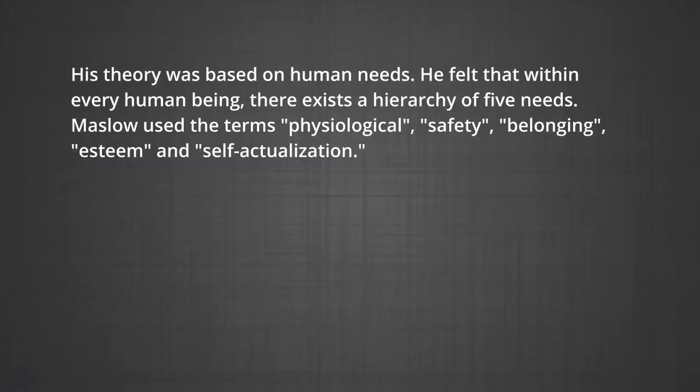Abraham Maslow, a well-known psychologist, in a classic paper published in 1943, outlined the elements of an overall theory of motivation. His theory was based on human needs. He felt that within every human being, there exists a hierarchy of five needs. Maslow used the terms physiological, safety, belonging, esteem and self-actualization to describe the pattern that human motivations generally move through.